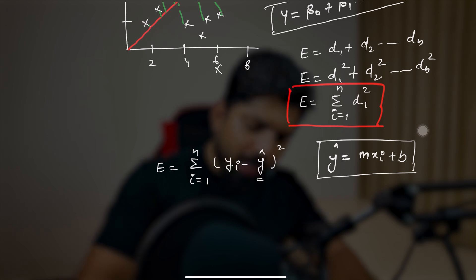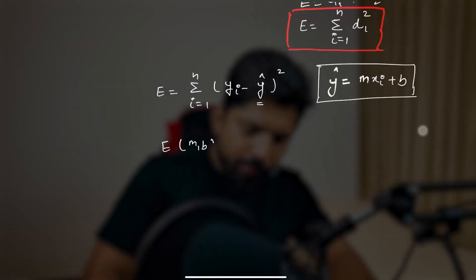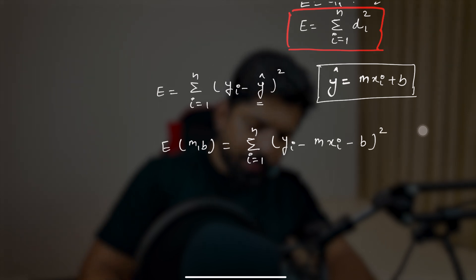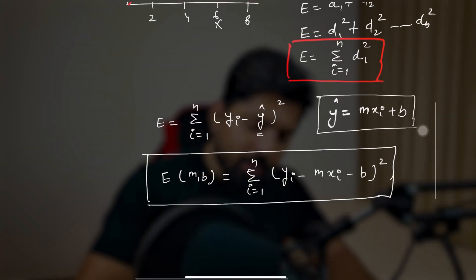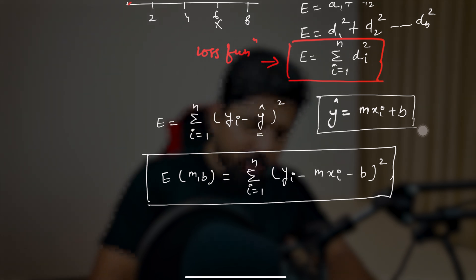We can replace these values and write the loss function E(m, b) as the summation from i = 1 to n of (yᵢ − mxᵢ − b)². This equation is also known as the loss function — sometimes written as J — or you can call it the error function. Now we have the equation for E, and what we want is to find the minimum value of E. We have two variables, m and b, which we can tune.